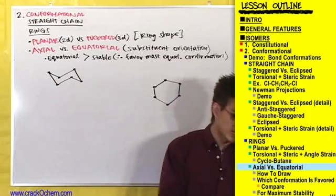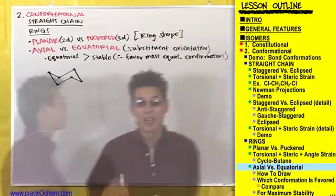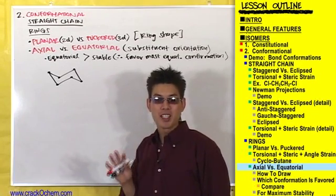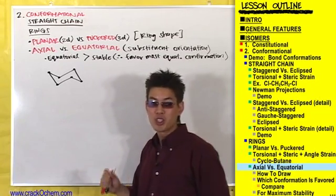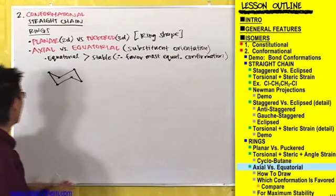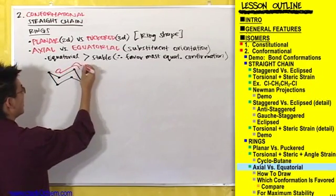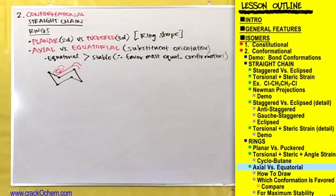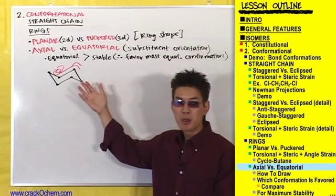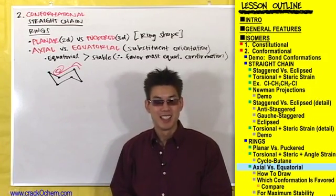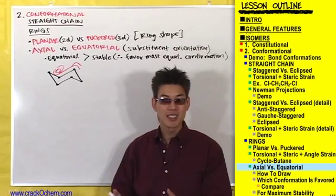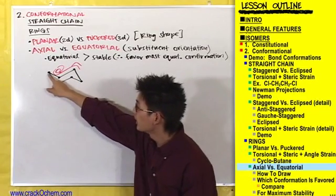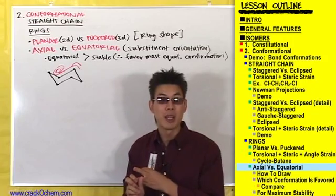Let's ignore the planar form for now and concentrate on the 3D chair conformation. They call it a chair because — if you use your imagination — you can see it as a recliner where someone is laying back with their feet up and hands behind their head. The important thing to know is that cyclohexanes exist in this chair form, and substituents attached to the carbons can either be in an axial or equatorial conformation.